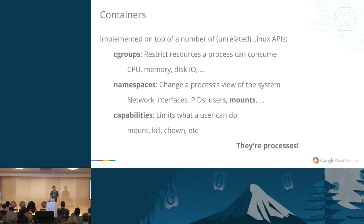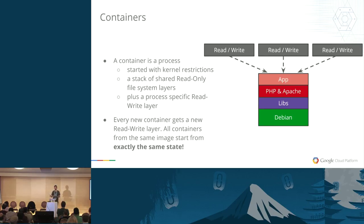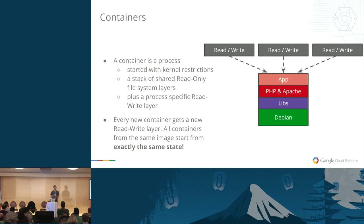Containers are essentially processes running directly on the machine or host. When using Docker and starting containers from the same image, each one has its own read-write file system, but each one is a copy of the original image. You can't expect that one container could write data to the file system and then be restarted somewhere else with the same state — each one has different state. When you restart, all containers start from the same image with the exact same state. They need some way to figure out what they need to do when they start up.